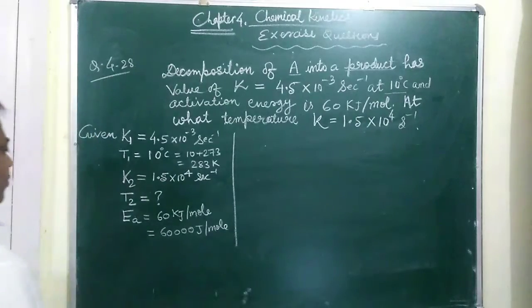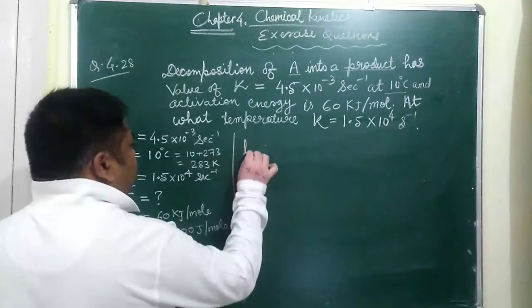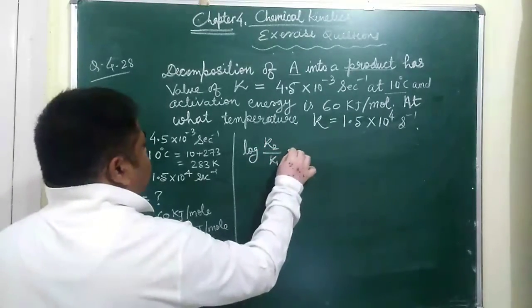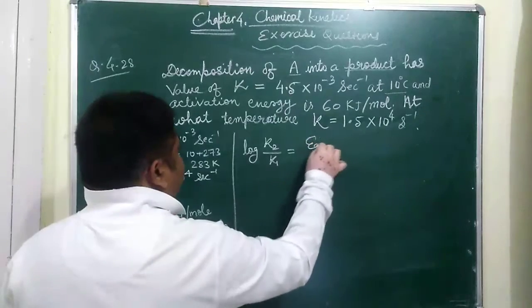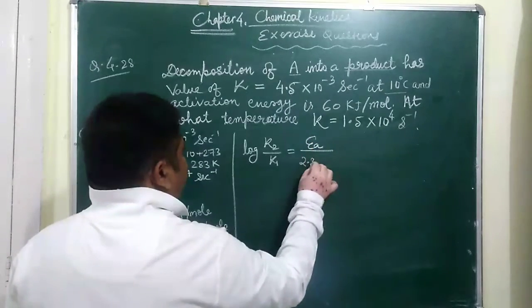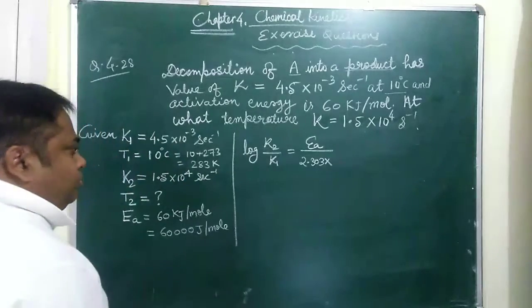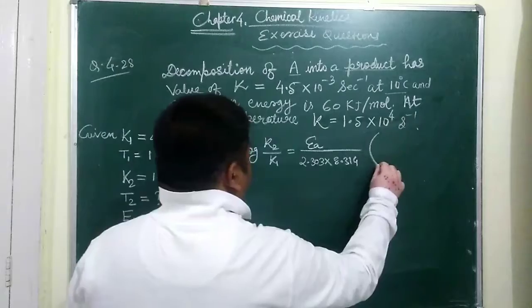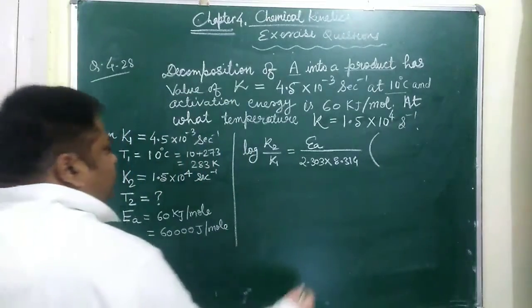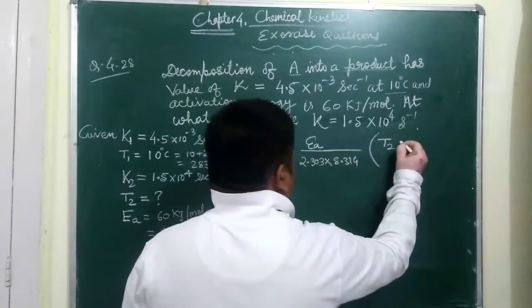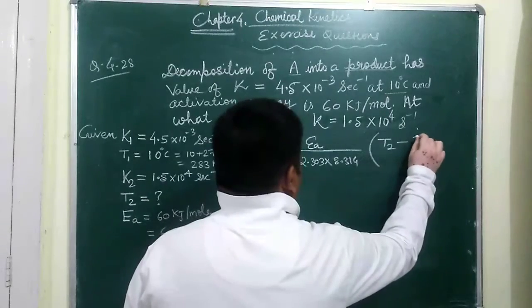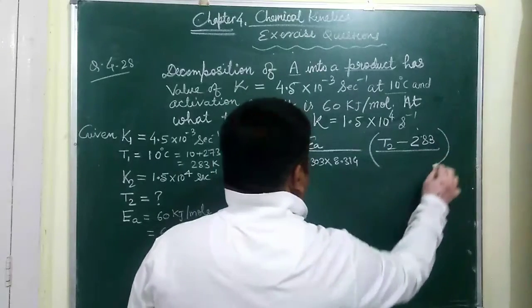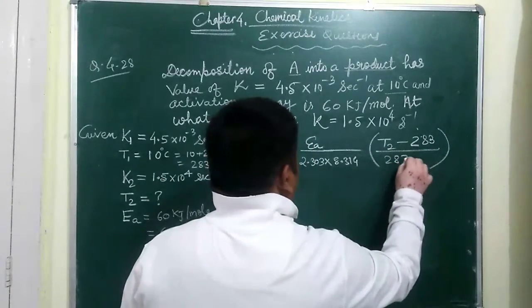The value of temperature and K is related in this way. Log K2 by K1 is equal to activation energy by 2.303 into 8.314 into this value T2 which we have to find out minus T1 by T1 multiplied by T2. T1 is known to us, T1 is 283.